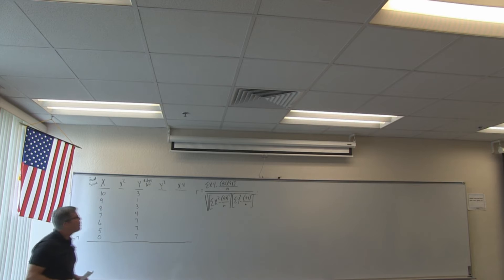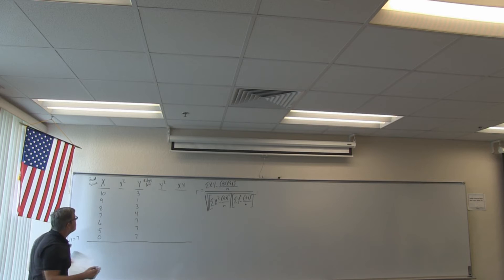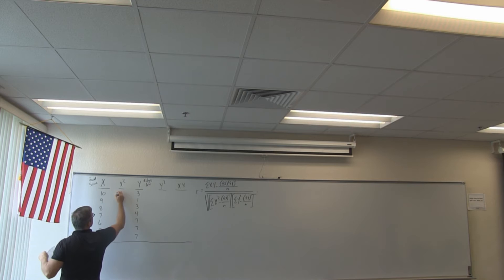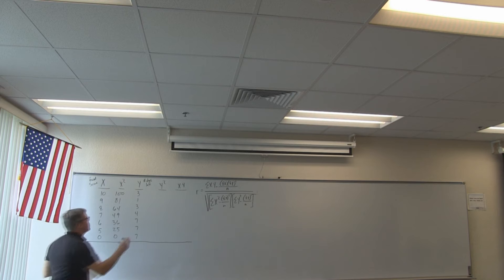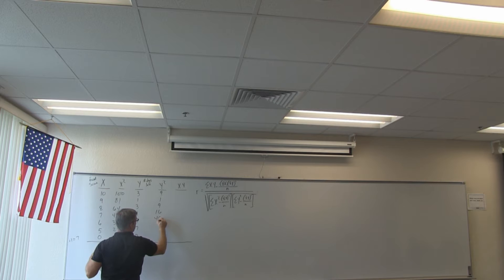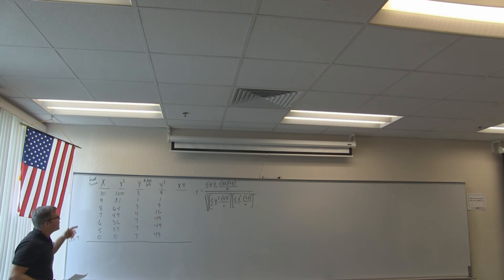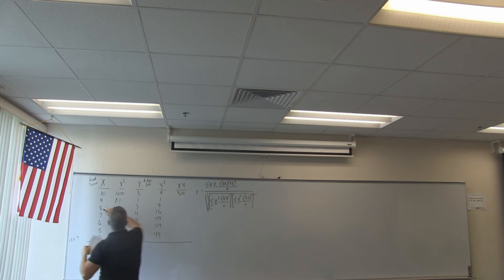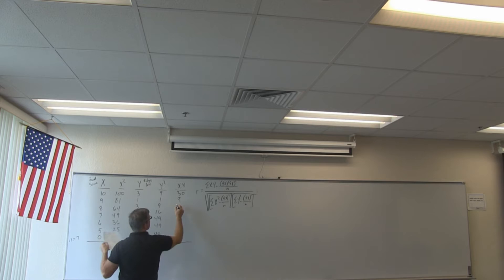We have to get the data set ready to compute Pearson R. We have to square each X and Y data point and create the product. 3 squared is 9, then 1, 9, 16, 49. And we create the product X times Y: 10 times 3 is 30, 9 times 1 is 9, 8 times 3 is 24, then 24, 28, 42, 35, 0.